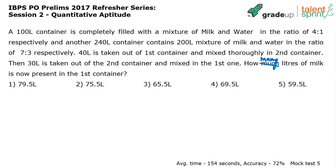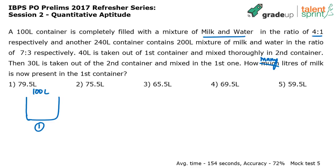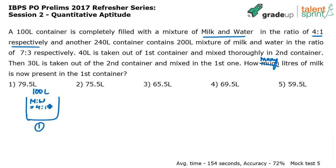There is a whole process that happens here. Container 1 has a quantity of 100 liters, with milk to water in the ratio of 4 to 1. So you just divide 100 liters in the ratio of 4 to 1, and you get 80 liters milk and 20 liters water. Very easy to do mentally — no need to put pen on paper.